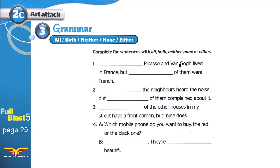Picasso and Van Gogh lived in France. Picasso — see the capital P — and Van Gogh — capital V, capital G — these are names of famous artists. Both of them lived in France, but neither of them were French. Picasso was from a different nationality, maybe Italian. And so is Van Gogh — he lived in France, but he wasn't French.